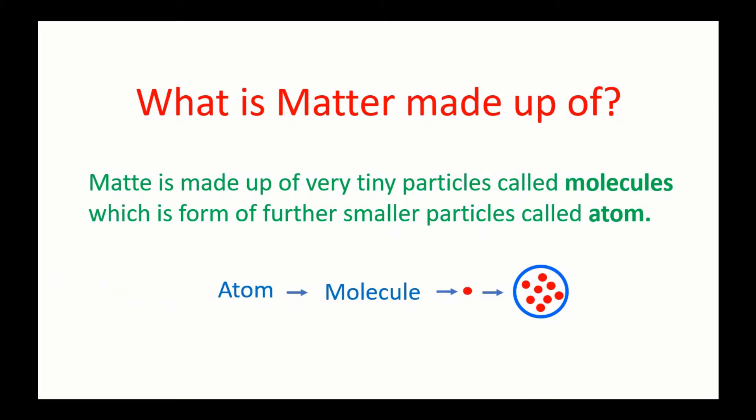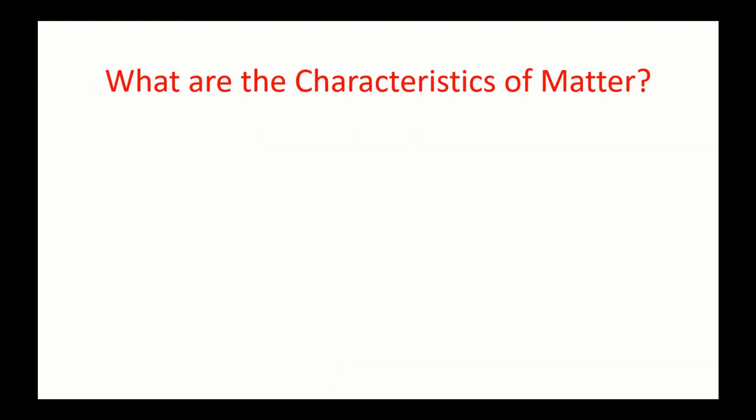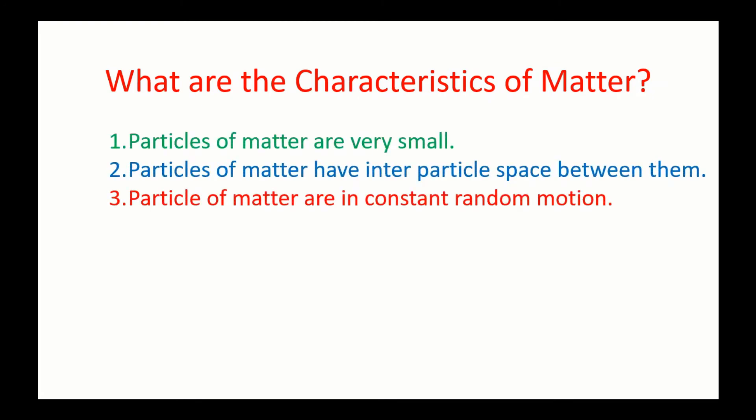Both atoms and molecules are too small to be seen through the naked eye. We can see them through a microscope. What are the characteristics of matter? One: particles of matter are very small. Two: particles of matter have inter-particle space between them.